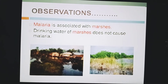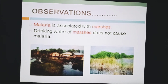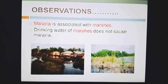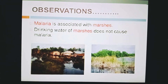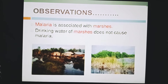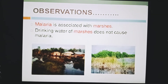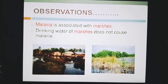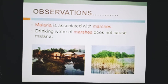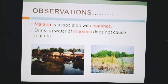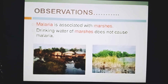Malaria is associated with marshes. Drinking water of marshes does not cause malaria. From these observations it can be concluded that plasmodium was not in the marsh water, but it must be carried by something that comes to the marsh water.